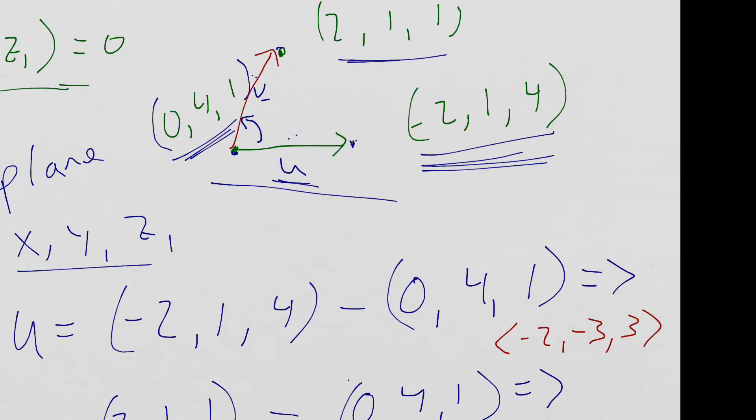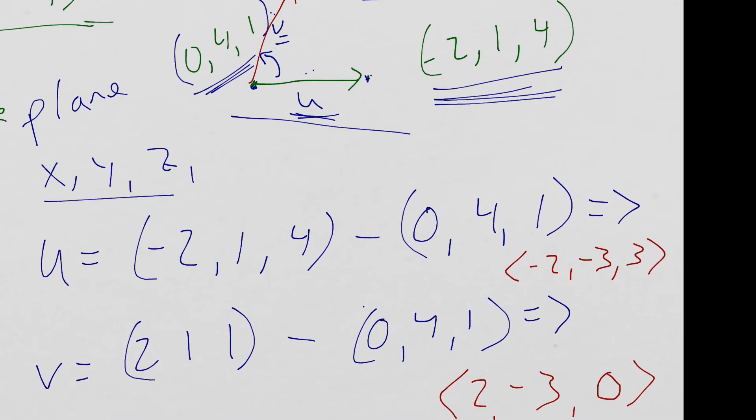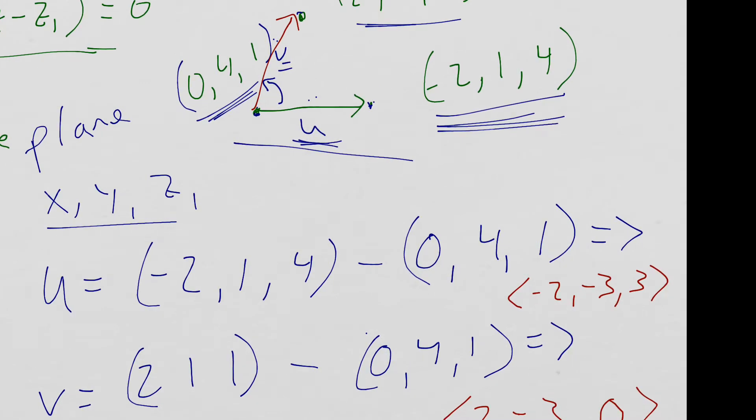So here's where I left off. We're trying to figure out what U and V are. So I've got that right here. I've got this point minus this point for U. So negative 2 minus 0 is negative 2. 1 minus 4 is negative 3. 4 minus 1 is 3. So that's that vector. That's vector U. It goes from this point to this point.